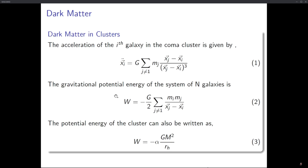A student points out a typo in the equation: the summation condition should be j ≠ i, not j ≠ 1, in both summations — to indicate that i and j are distinct galaxies. The speaker confirms this and notes they will make the correction when posting the material.